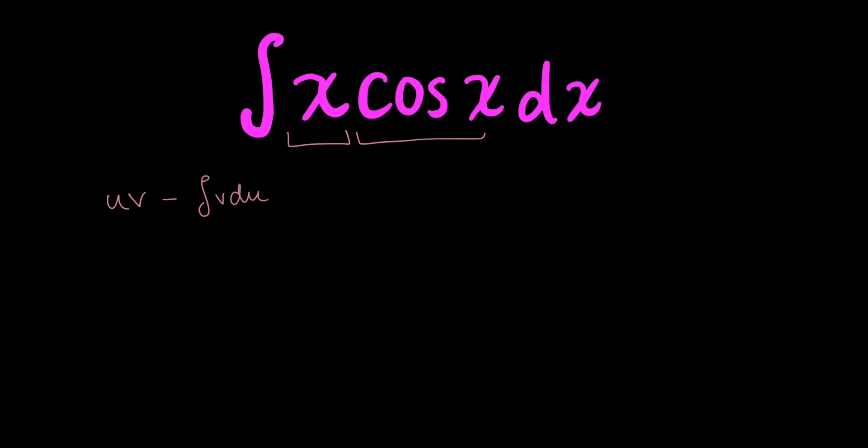And to figure out what u, v, du and dv is, we know that our integral must be in the form of u dv. So we have to assign what u and dv is based on our integral. And to assign those values, we typically use the acronym LIATE.